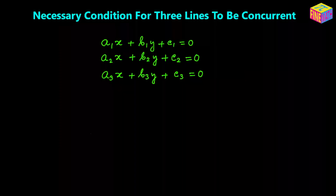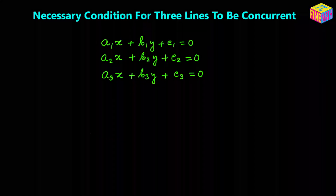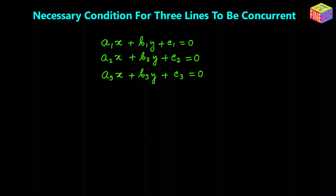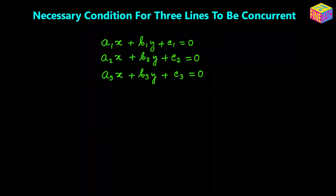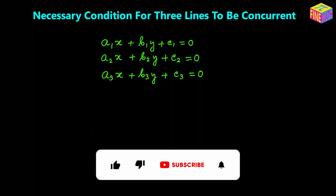Hi everyone. In this video we are going to discuss how to find out the necessary condition for three lines to be concurrent — meaning what is the condition for these three lines to intersect each other at a single point. In a previous video I discussed the necessary condition for two lines to be concurrent, and I've shared the link in the description, feel free to watch that video.